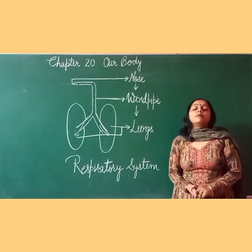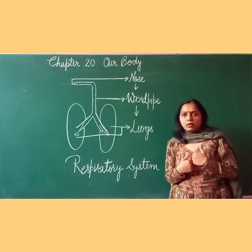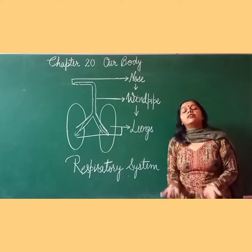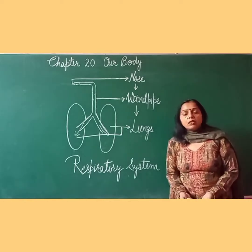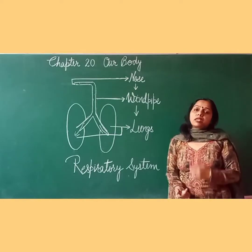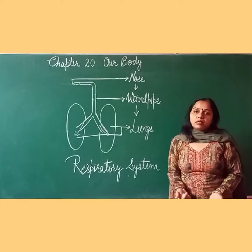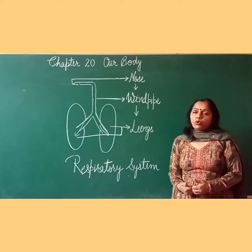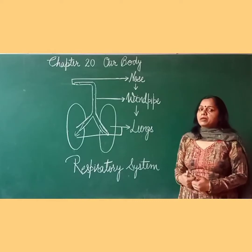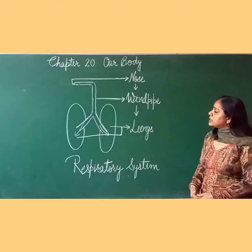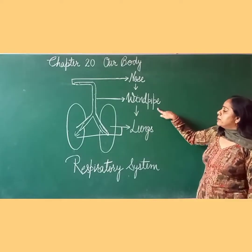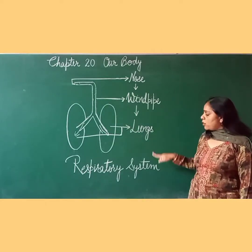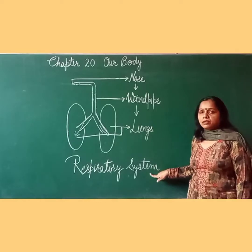The respiratory system helps us breathe. We take in oxygen and give out carbon dioxide. The main organs of the respiratory system are the nose, windpipe, and lungs.